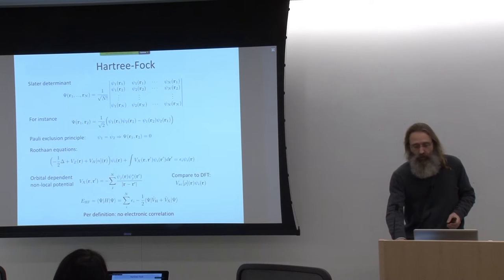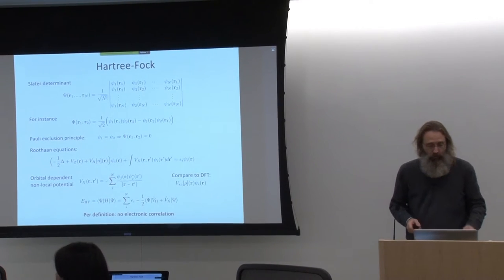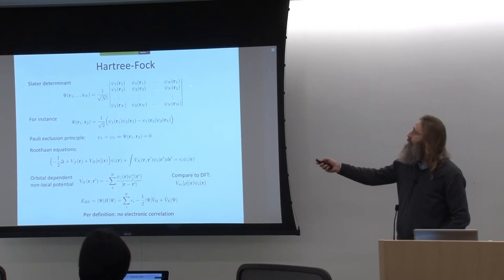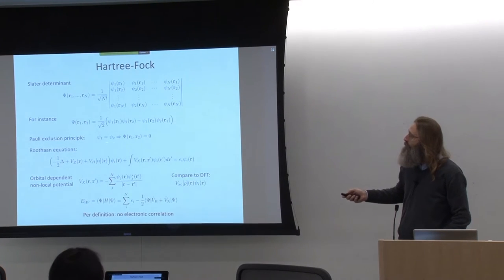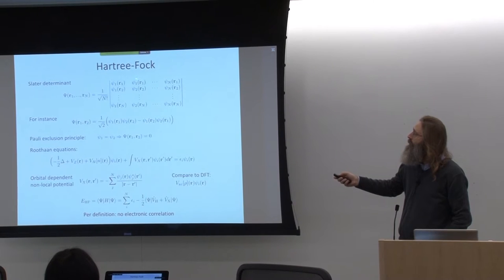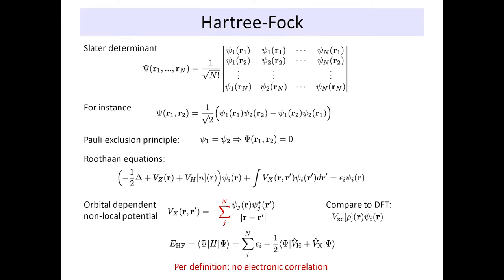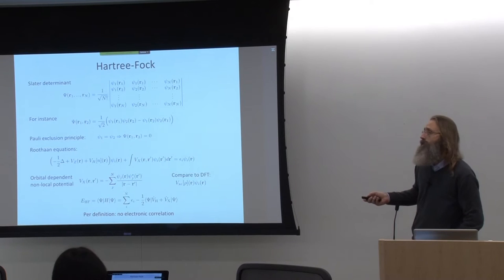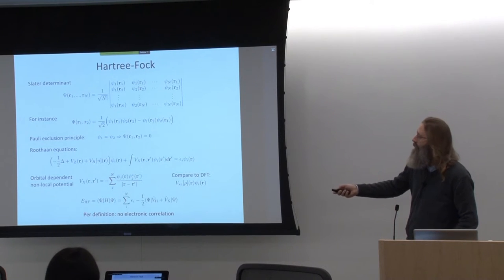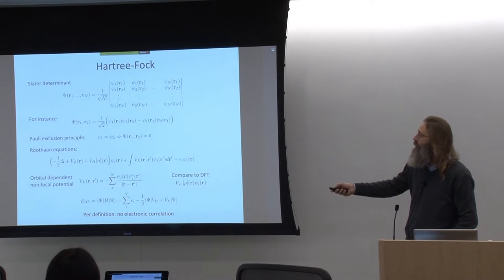Hartree-Fock theory is a well-known approximation from quantum chemistry. And with this particular ansatz for the many-body wave function, we end up, when we want to solve for these one-electron functions — like we did yesterday by means of the Kohn-Sham equations — with very similar-looking equations called the Roothaan equations. The only obvious difference now is that where we used to have an expression that contained in the Hamiltonian only local potentials, now we have a non-local potential as well.